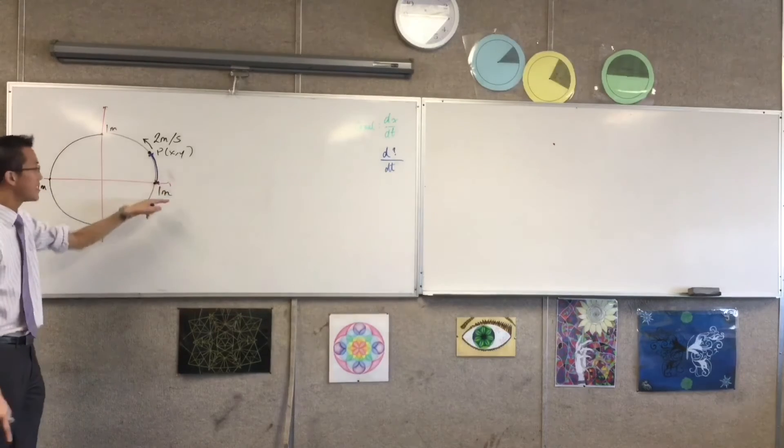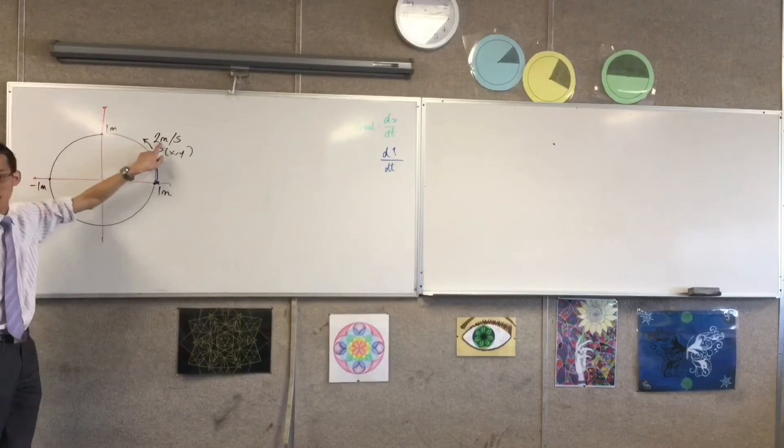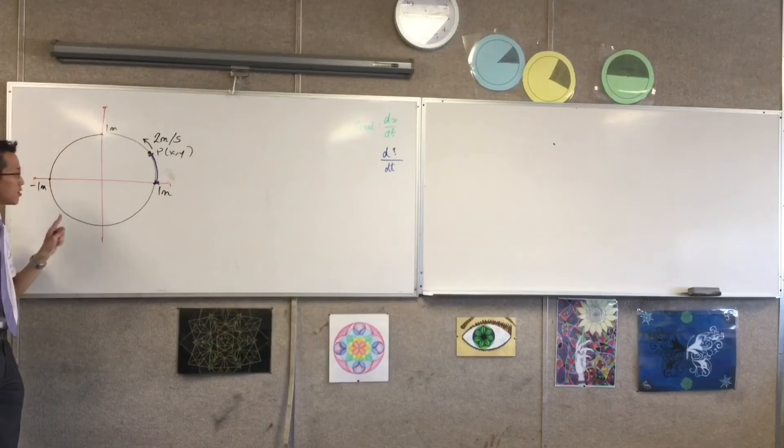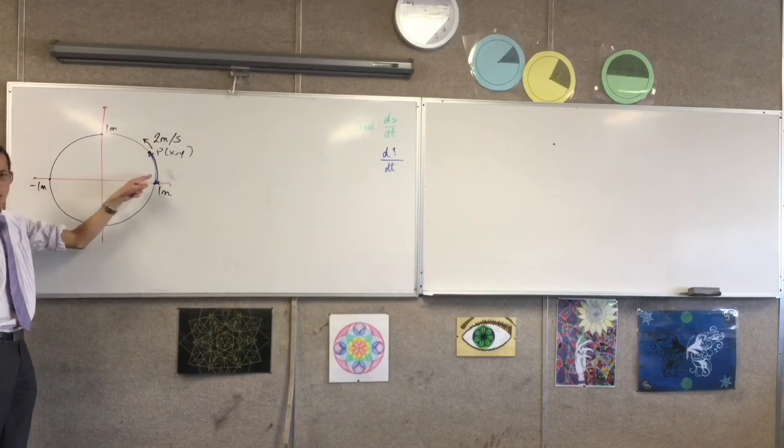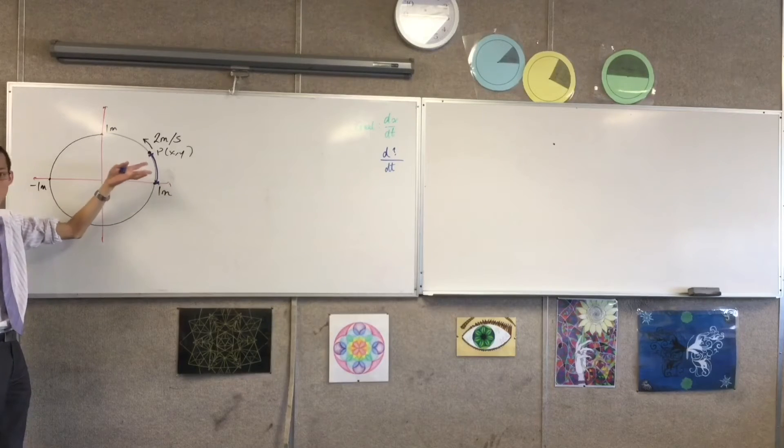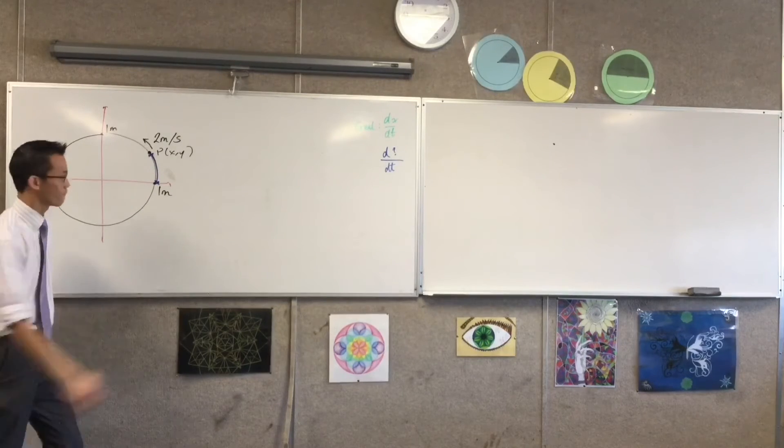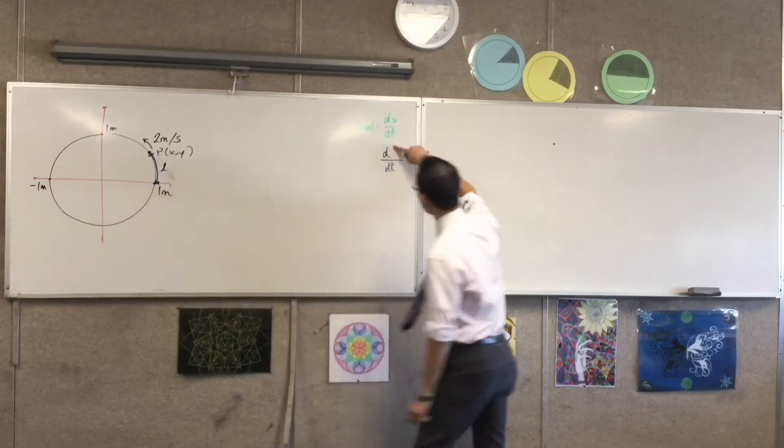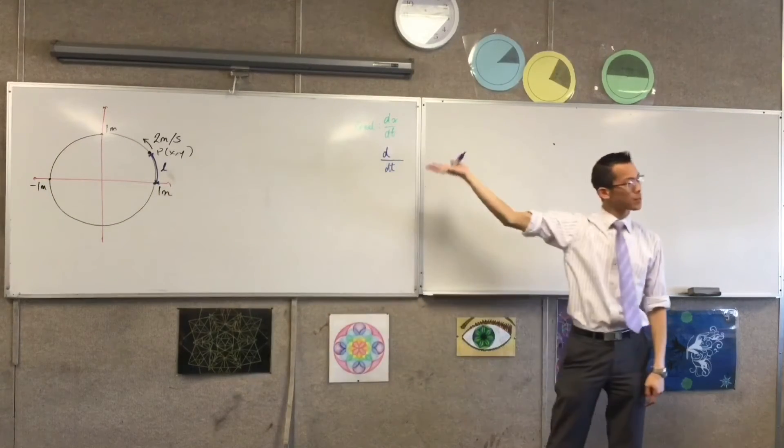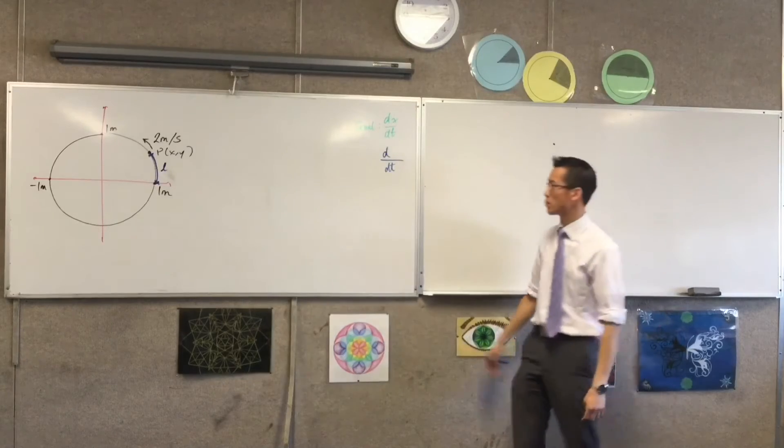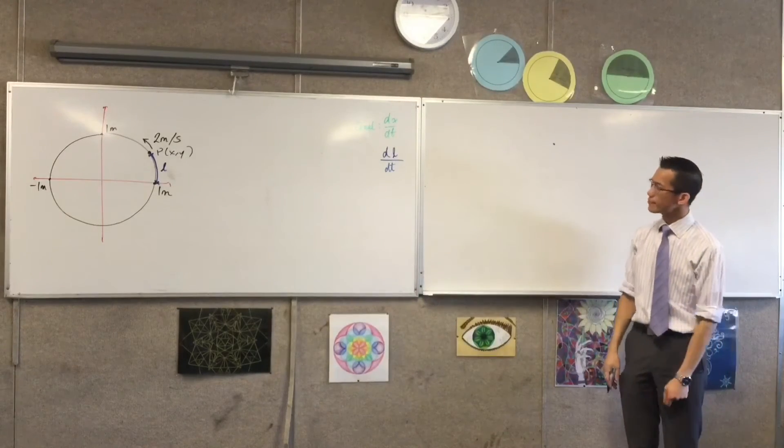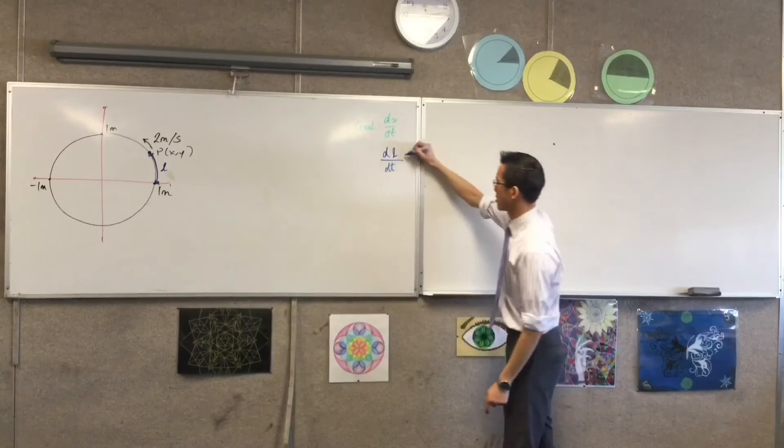Now, the reason why this is useful is because this is a curved length, and that's exactly what this two meters per second is referring to. How fast it's going around the edge. So, in order to write this, well, I need to give this a name. What do we usually call arc length? Let's name this L, which means that this two meters per second constant velocity I was given before is dL/dt. Okay, so I'm going to say that's two.